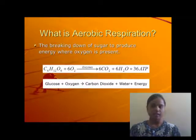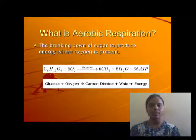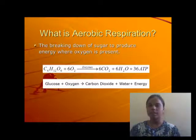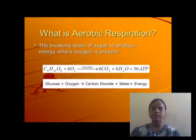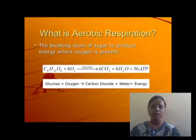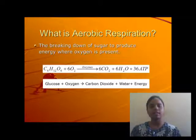Aerobic respiration is the breakdown of sugar to produce energy where oxygen is present. It occurs in human beings. The reaction involves glucose combining with oxygen, releasing carbon dioxide and water as waste products, with energy as the main product.